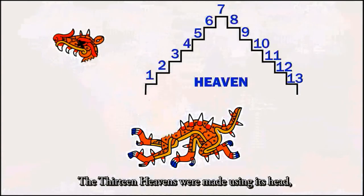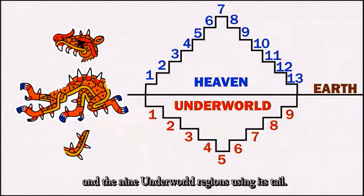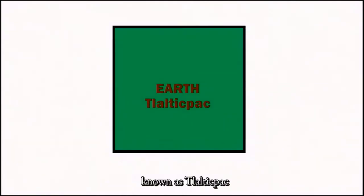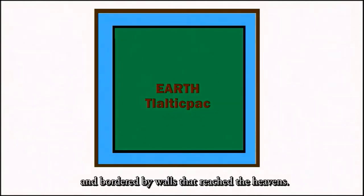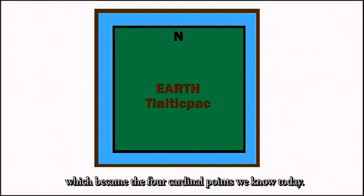The 13 heavens were made using its head, the earth out of its torso, and the nine underworld regions using its tail. The earth, known as Tlatikpak, was square-shaped, surrounded by divine water, and bordered by walls that reached the heavens. The gods also stretched Tlatikpak across the four winds, which became the four cardinal points we know today.